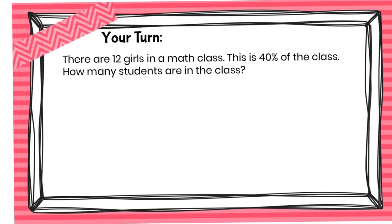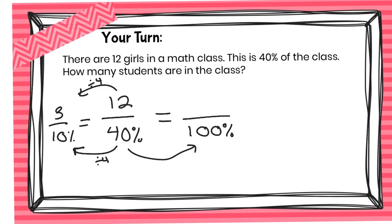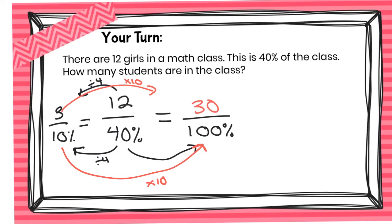Now it's your turn. There are 12 girls in a math class — this is 40 percent of the class. How many students are in the class? Let's check our answer: 12 girls represent 40 percent, but we are trying to find the entire class, which is 100 percent. We can go down to 10 percent: 40 divided by 4 is 10, and 12 divided by 4 is 3. Then from 10 percent, times 10 to get 100, so 3 times 10 is 30. There are 30 students in the class.